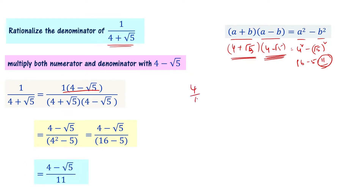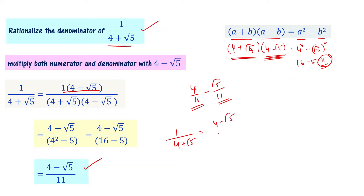We can write this as 4 by 11 minus root 5 by 11. For 4 by 11 we get an accurate solution using long division. Square root of 5 divided by 11 can also be computed accurately by long division. This means we are in a position to get an accurate value for this particular number. So 1 by (4 plus root 5) is equal to (4 minus root 5) divided by 11. This is the answer.